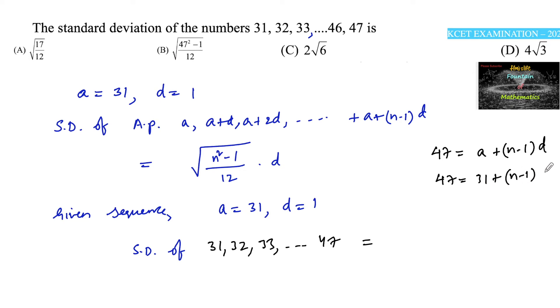So we can add 47 minus 31 which is equal to n minus 1, or 16 is equal to n minus 1, or n is equal to 16 plus 1, 17.